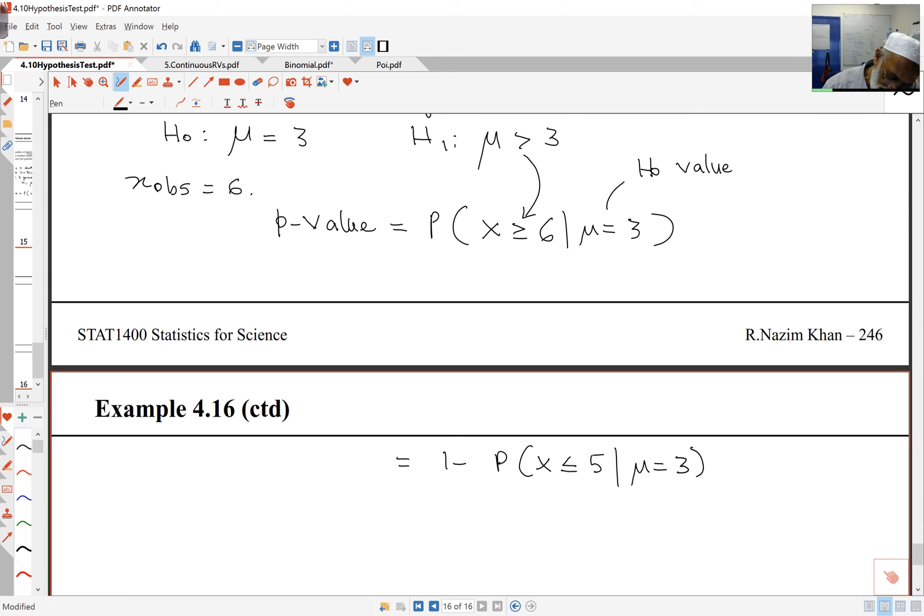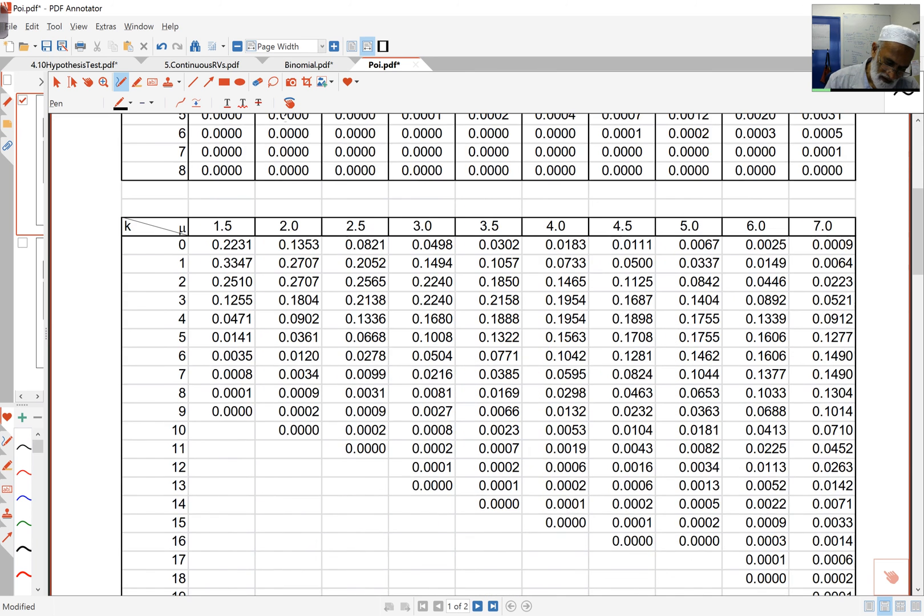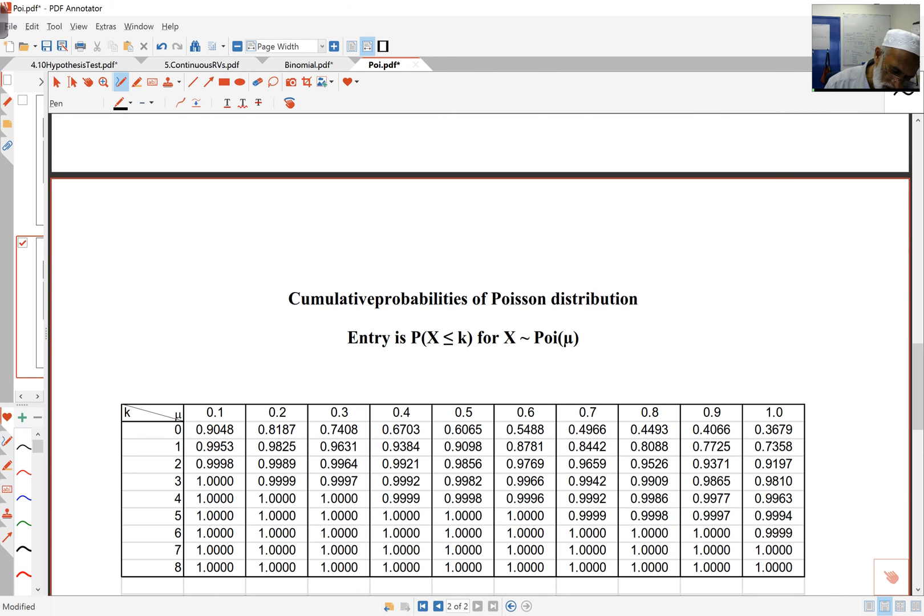As before, I need to look up tables, but it's Poisson tables, and again it's one minus the complement probability of X less than or equal to five given that mu is three. I'll need to look up Poisson tables. I've got individual probabilities and cumulative probabilities.